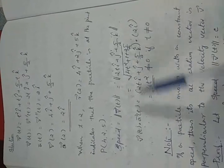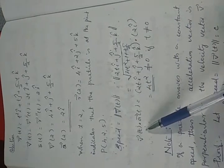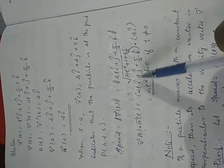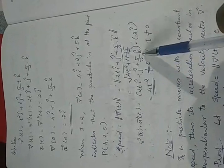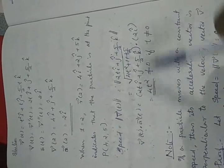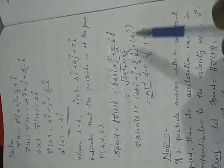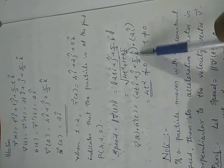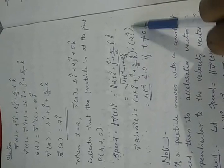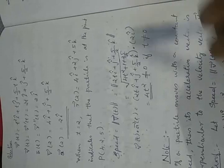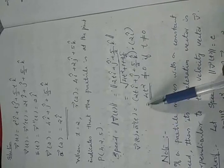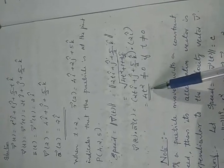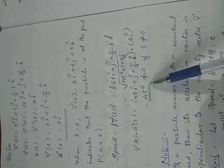Let us consider the dot product of velocity and acceleration vectors. V(t)·A(t) = (2ti + j + (5/2)k)·(2i) = 4t, since the j and k components of A(t) are zero. This dot product equals 4t, which is zero only when t = 0. If t ≠ 0, the dot product is non-zero.